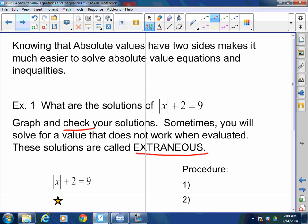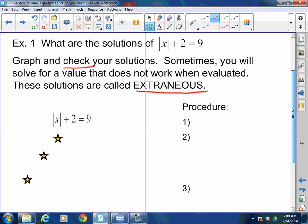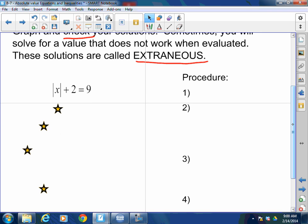Nice and easy. Now let me show you the procedure because it's always the same. I want you to solve the absolute value of x + 2 = 9. Number one, isolate the absolute value.